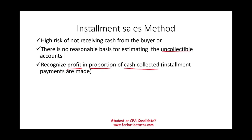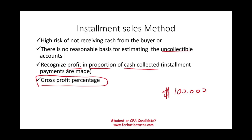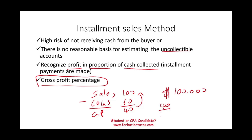How do you measure profit? For example, if you received $100,000 in cash, how much of that is profit? You're going to use the gross profit percentage from the sale. Gross profit percentage is: sales minus cost of goods sold equals gross profit. If sales is $100 and cost of goods sold is $60, gross profit is $40. To find the gross profit percentage, take 40 divided by 100 — the gross profit on the sale is 40%.